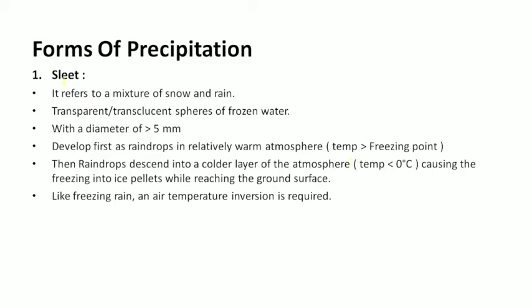What are the forms of precipitation? The first form is sleet. It refers to a mixture of snow and rain. It is transparent spheres of frozen water. Its diameter is greater than 5 mm. Sleet develops first as raindrops in relatively warm atmosphere whose temperature is greater than freezing point. The raindrops descend into a colder layer of the atmosphere whose temperature is less than 0 degrees Celsius, causing the freezing into ice pellets where reaching the ground surface.